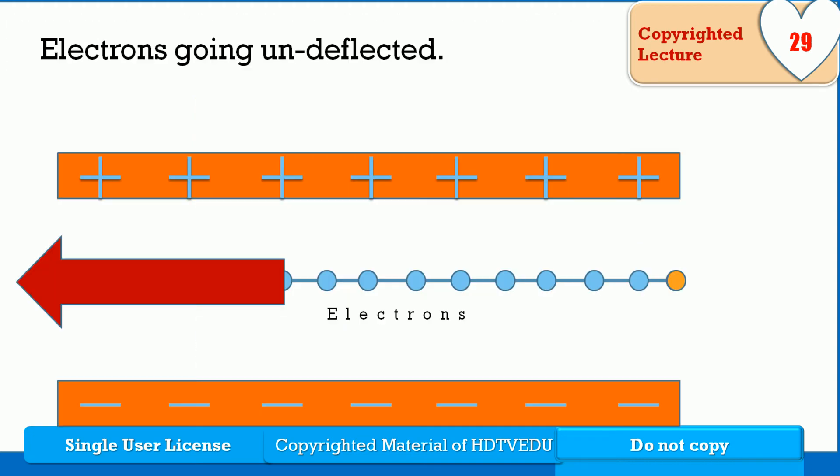Electrons, electrons going undeflected in between two charged parallel plates. That is linear motion.